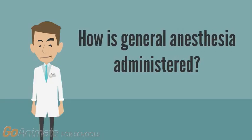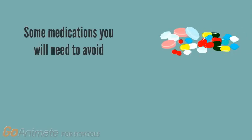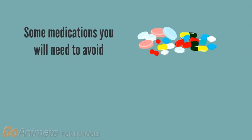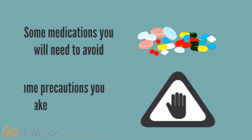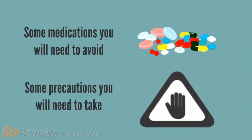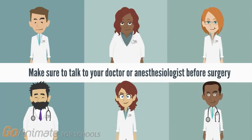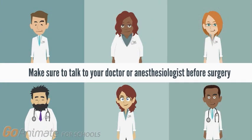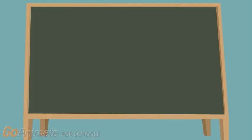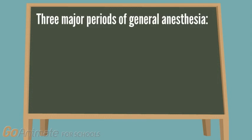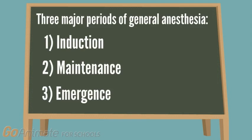How is general anesthesia administered? First of all, there are some medications you might need to avoid before undergoing anesthesia, or some precautions you might need to take if you have certain conditions. Therefore, make sure to discuss with your doctor or anesthesiologist before surgery. There are three major periods to general anesthesia: induction, maintenance, and emergence.